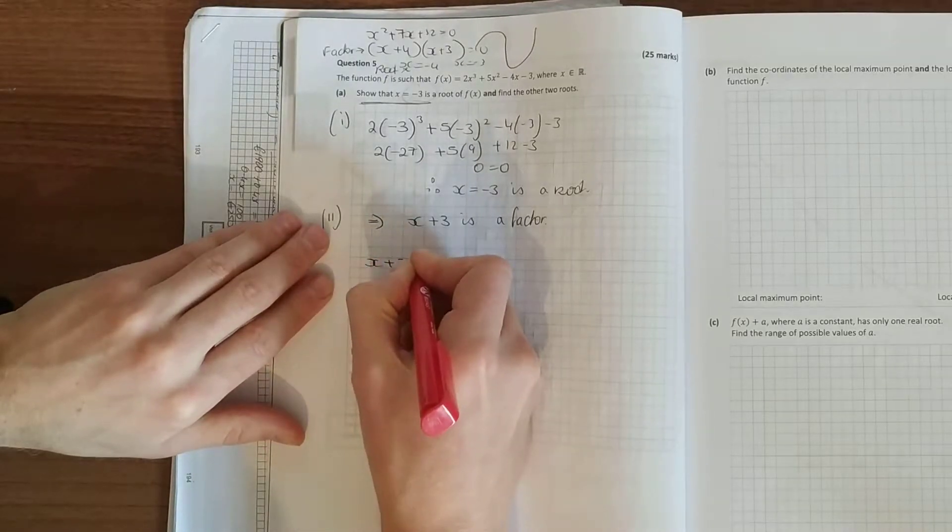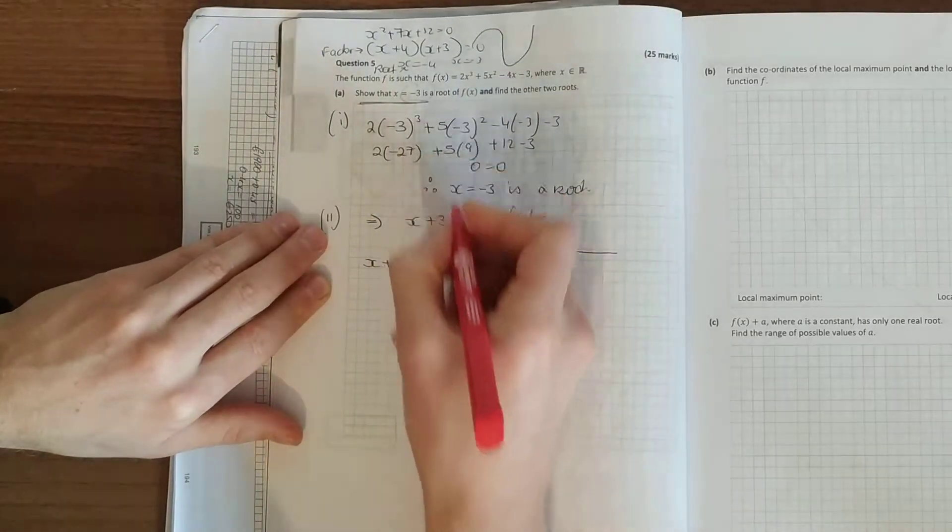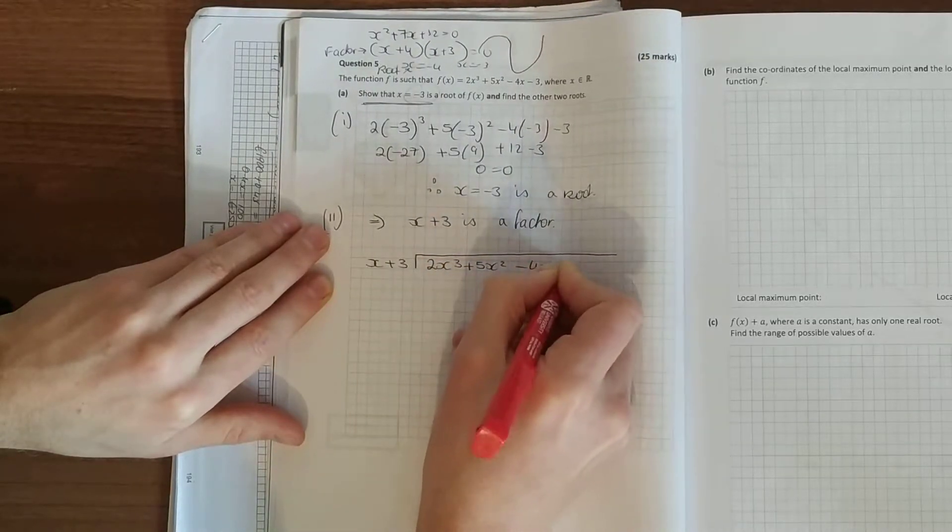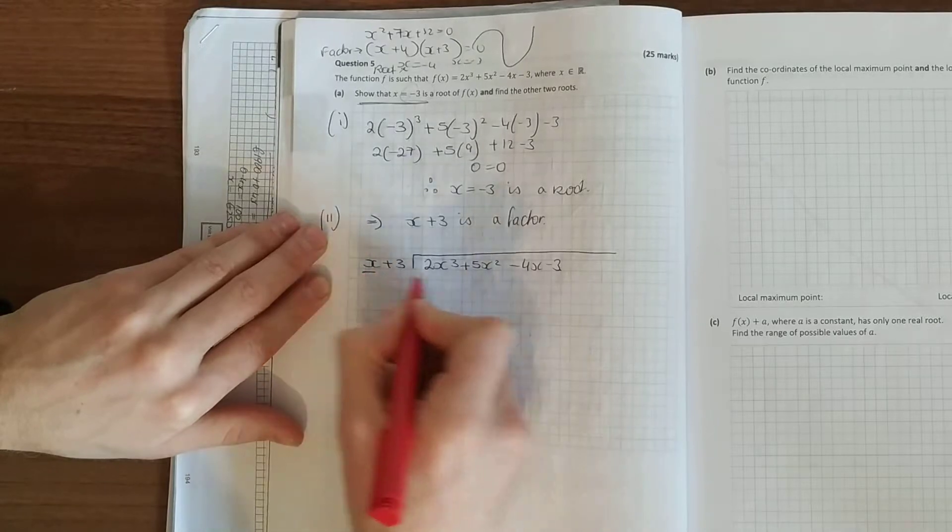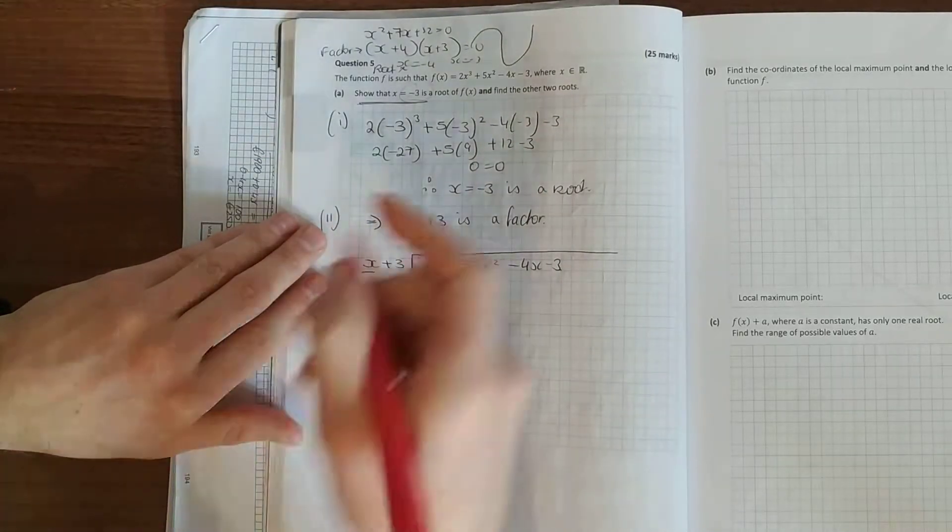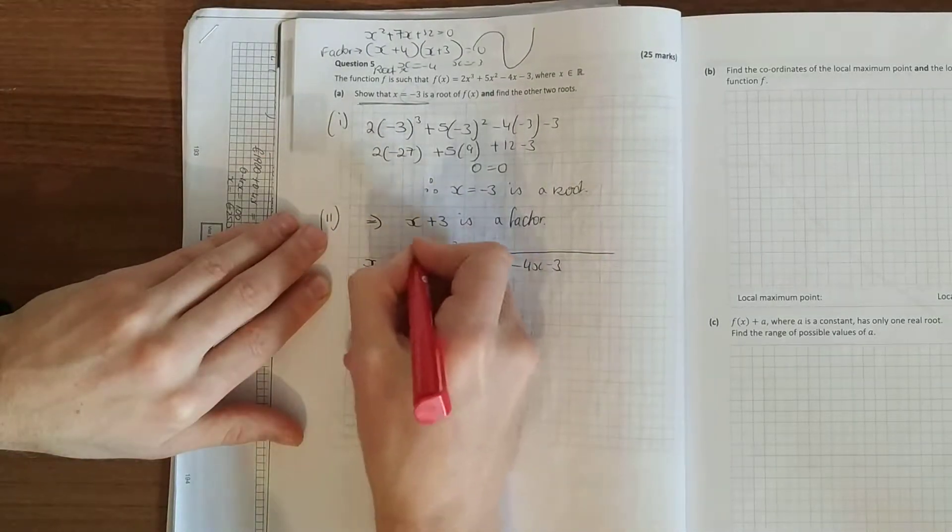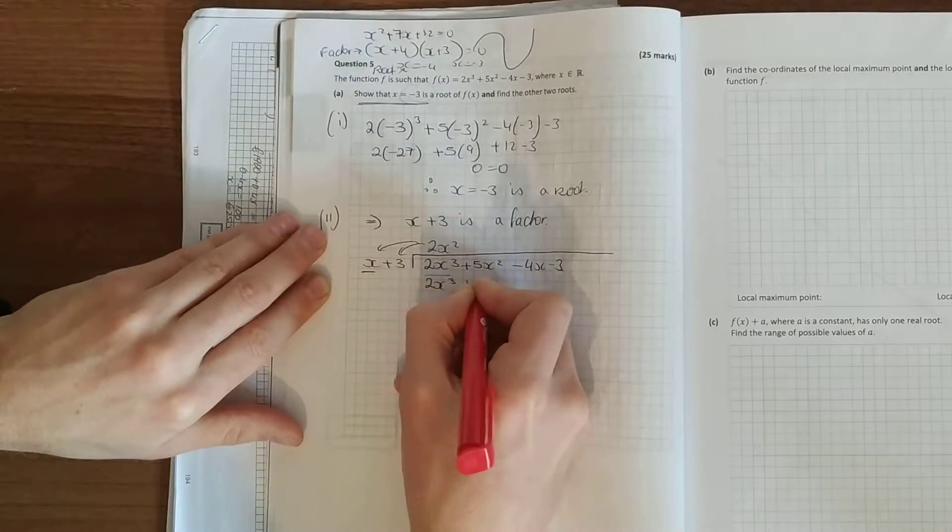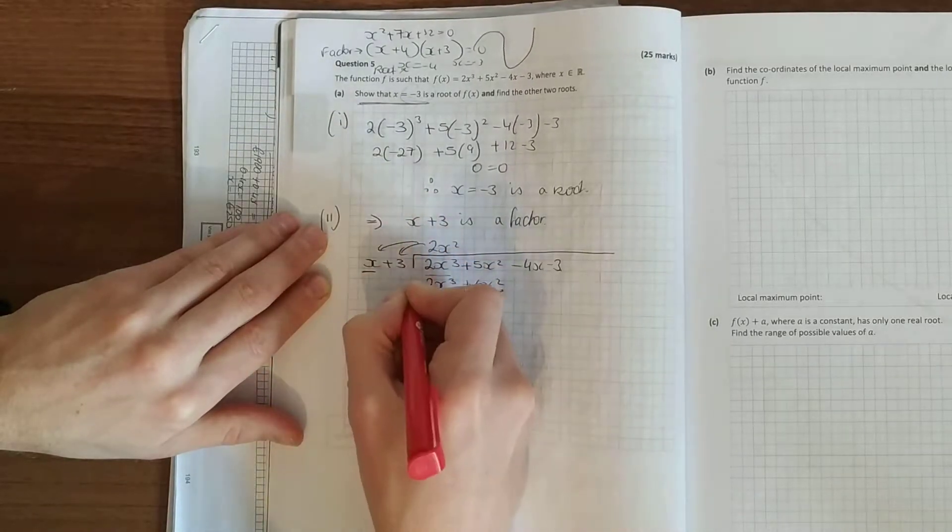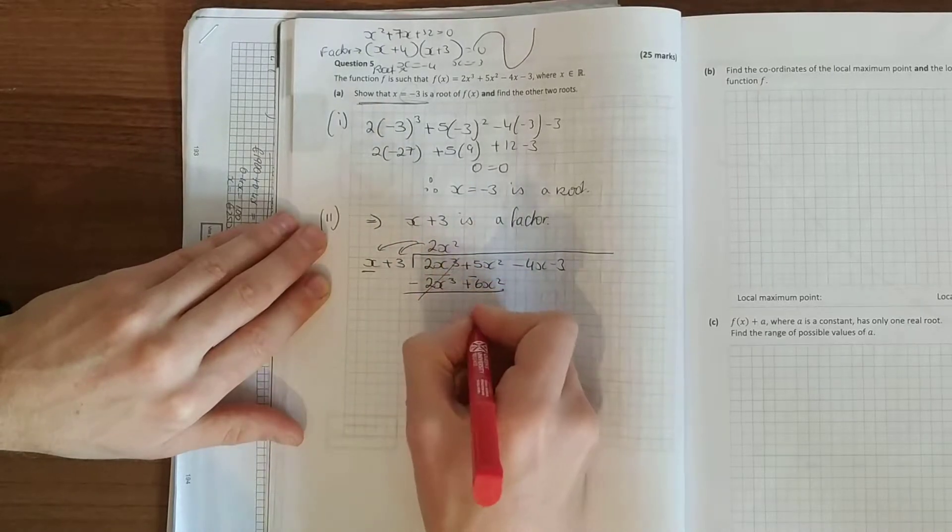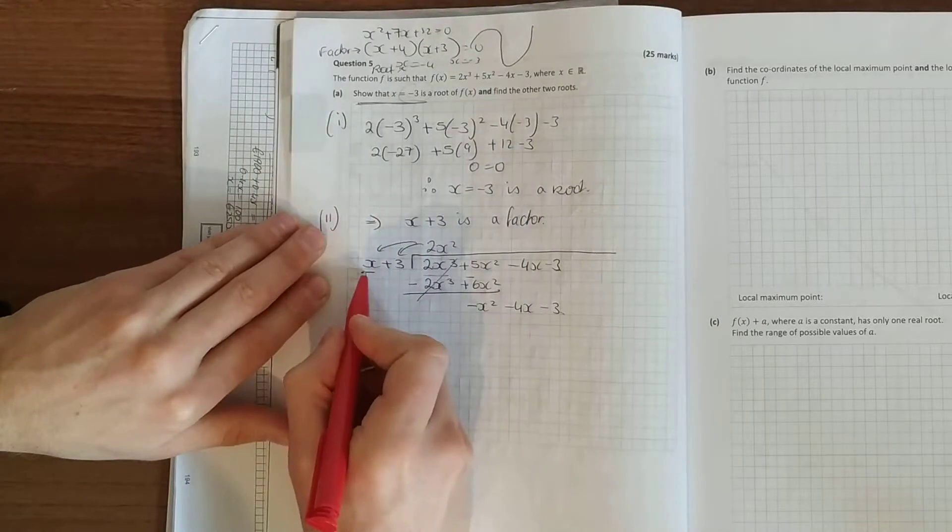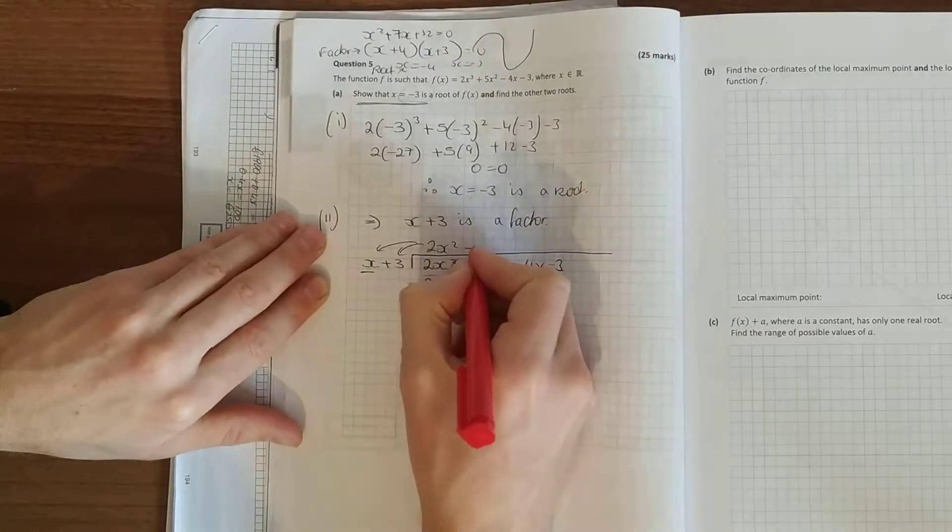Now you might do your box method or whatever, just do simple long division. And just say to yourself, what do you multiply x by to get 2x cubed? 2x squared. Multiply it down. Draw the line, change the size. There you go. What do you multiply x by to get 2x squared? Minus x.